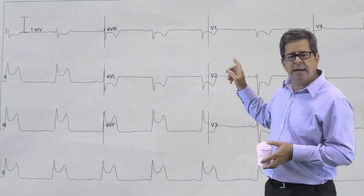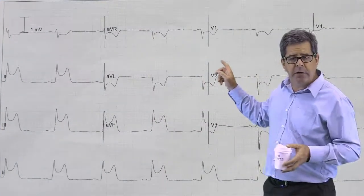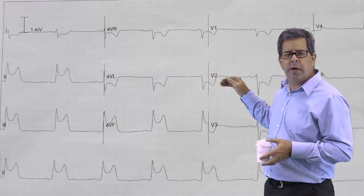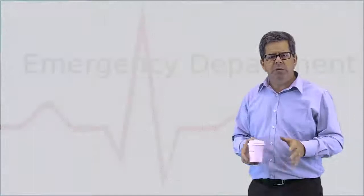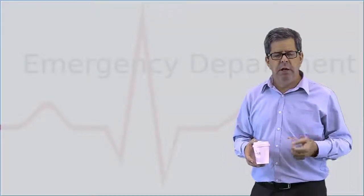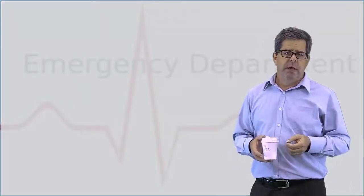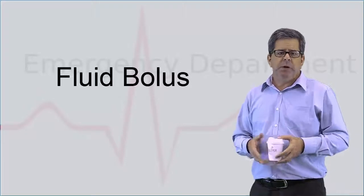So you can see there's ST elevation inferiorly, 2, 3, AVF, and also there's ST depression V1, V2, V3. These patients will come in with a dry chest but they'll be hypotensive and will respond to 500 mils of normal saline bolus.